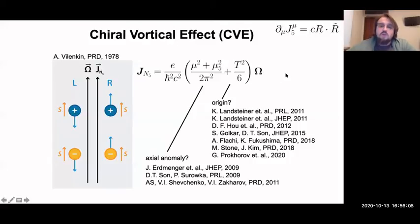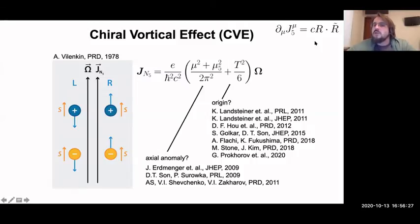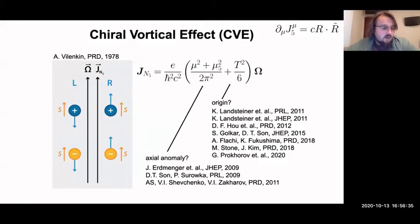The T² omega part of the chiral vortical effect is argued to be related to the gravitational anomaly, specifically the axial current of massless fermions violated by R-tilde R. There is a discussion about whether it should be related to global rotational anomalies or local ones — this is an active area of recent works. This is where I can start my own story.